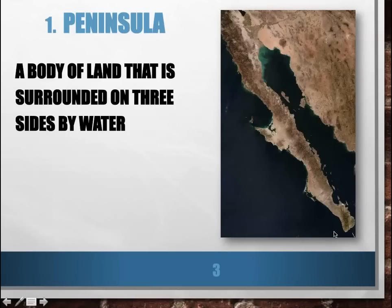This is the Pacific Ocean, down here is Cabo San Lucas, and over here we have the Sea of Cortez. Peninsulas often look like they're a finger or a thumb sticking out into the ocean or the sea. Some other examples of peninsulas would be Florida, Korea, and Mexico also has the Yucatan Peninsula.